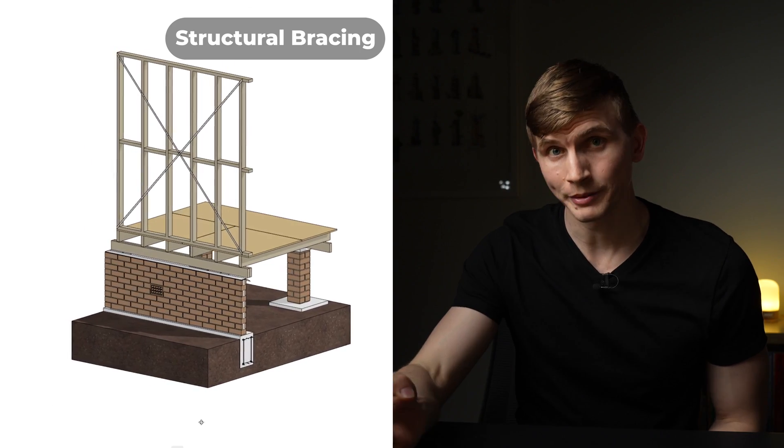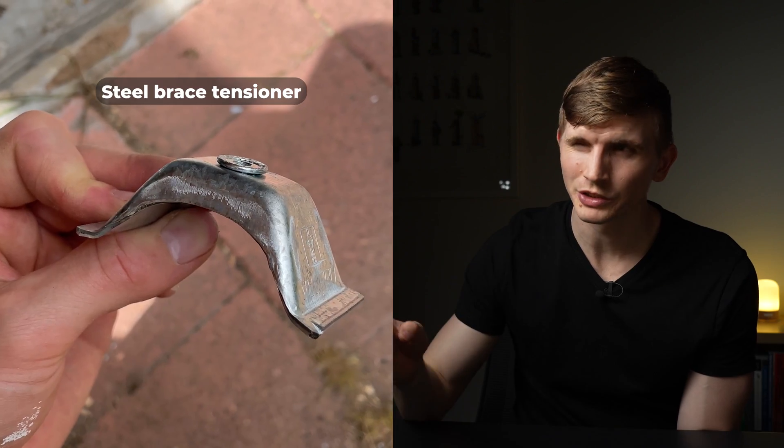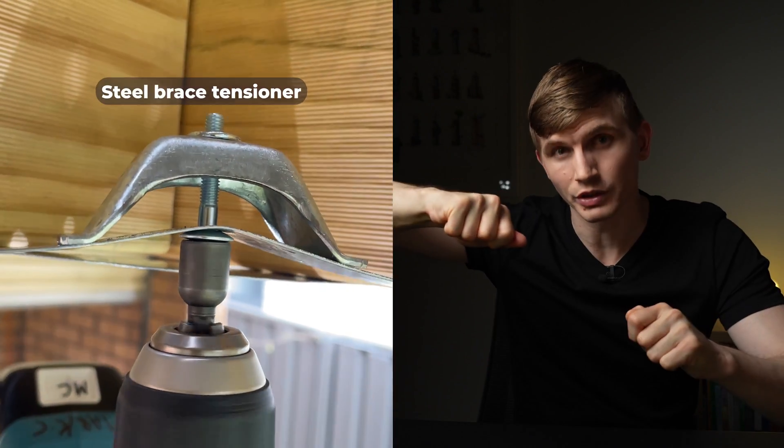Structural bracing is installed to the frame. Common bracing used includes structural steel bracing like hoop iron strapping and structural plywood. If it's structural steel bracing, steel brace tensioners are often used to tighten the bracing across the structure.